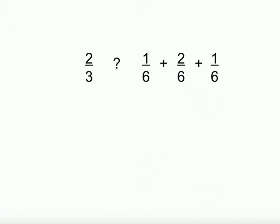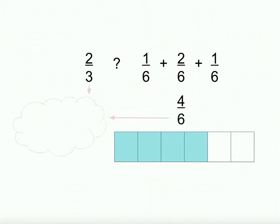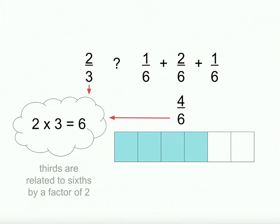Let's try this one. We have two-thirds and then if we add one-sixth plus two more sixths plus one-sixth we get four-sixths all together. To compare this to thirds we need to think about how thirds and sixths are related. We know that two times three is six, so thirds and sixths are related by a factor of two.